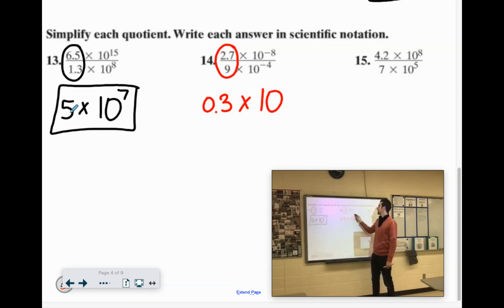And then we have to subtract negative 8 minus negative 4. Now remember, minus negative really means plus. So negative 8 plus 4 would become negative 4. 0.3 times 10 to the negative 4th.